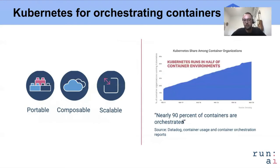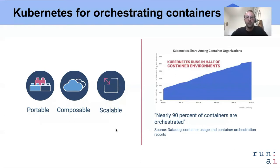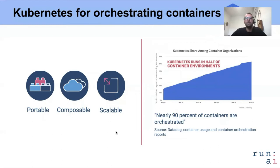From a recent study done by Datadog, you can see that almost 90% of containers are orchestrated, and the de facto container orchestration tool today is Kubernetes, used in more than half of containerized environments. The advantages have been talked about many times. What we're going to focus on today is what data scientists actually need and what kind of work they do, and how we make sure it's secure.